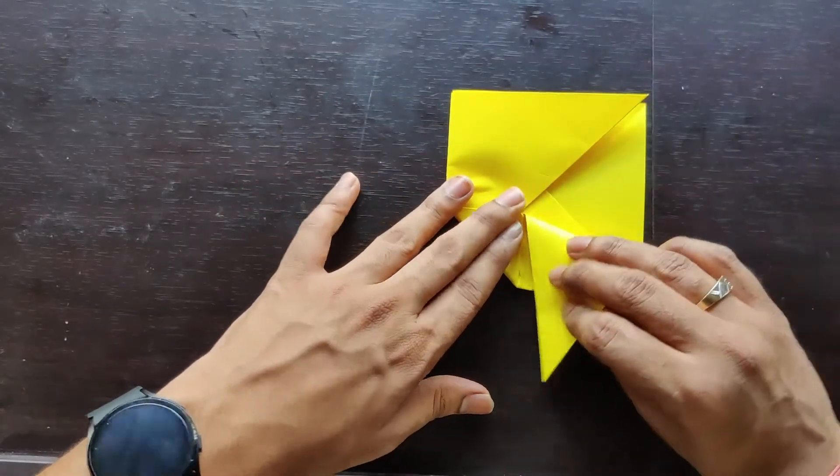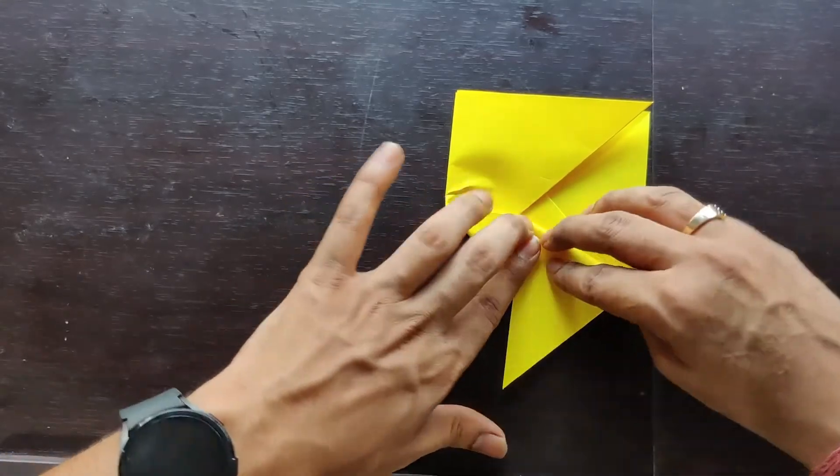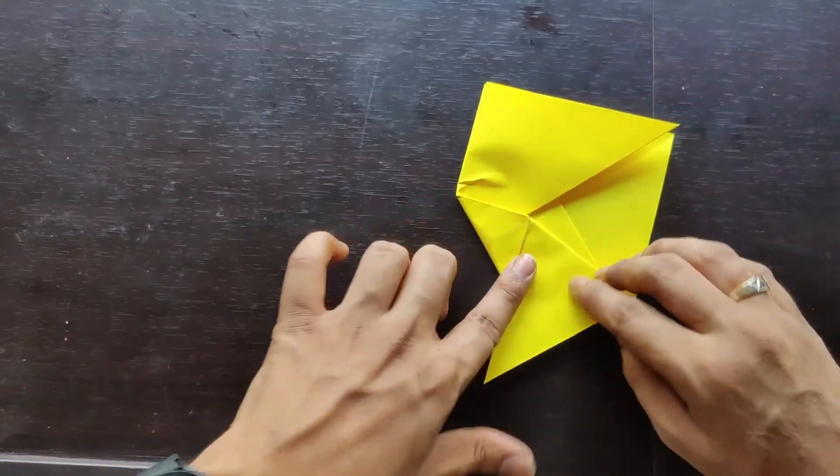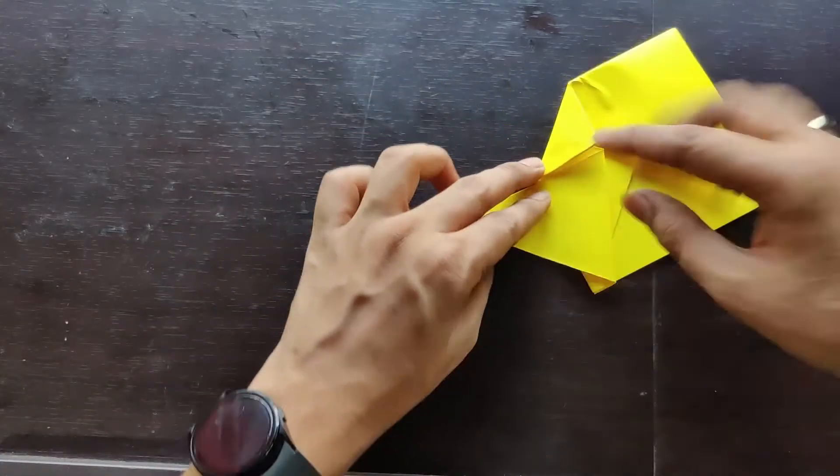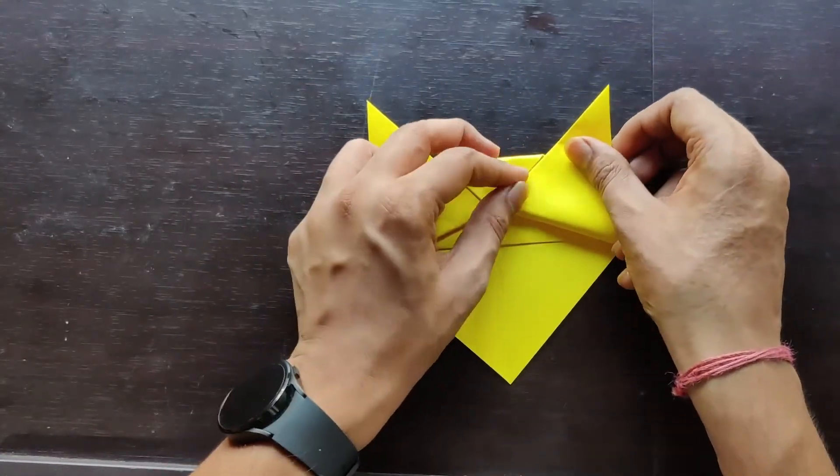Now you have this flap, fold it along this crease, just fold it like this. These are the ears of the cat. Also this one, fold it like this.